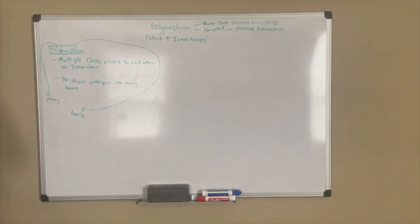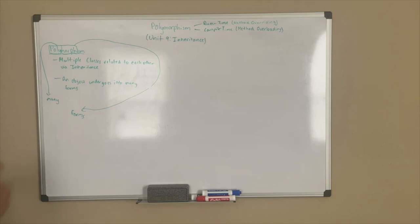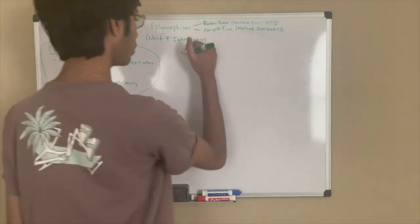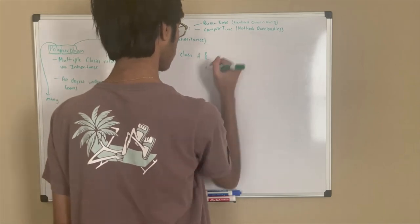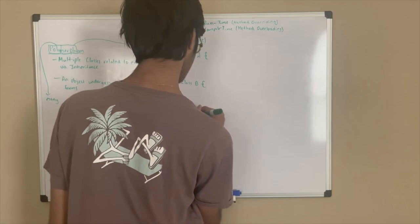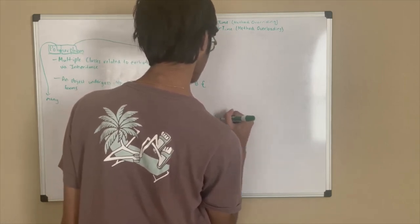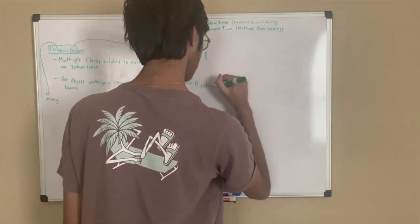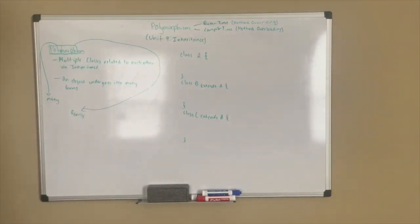So two definitions: multiple classes relate to each other through inheritance, and an object undergoes many forms. The easiest way to know polymorphism is to just break down the word — poly means many, morph means forms, so many forms. Since polymorphism is part of OOP, an object can be converted into many forms. Now let's give an example of how you'd utilize polymorphism in Java. We have class A, class B, and class C.